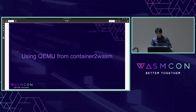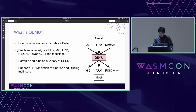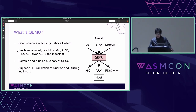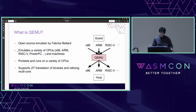Container-to-wasm recently added support for using QEMU. QEMU is an open-source emulator by Fabrice Bellard. It emulates a wide variety of CPUs including x86, ARM, RISC-V, and can also emulate a variety of machines including boards. QEMU is portable — it runs on a variety of host CPUs. QEMU also has performance benefits by supporting JIT compilation of binaries and multi-core emulation.